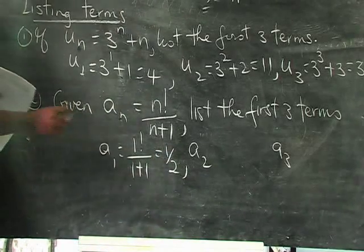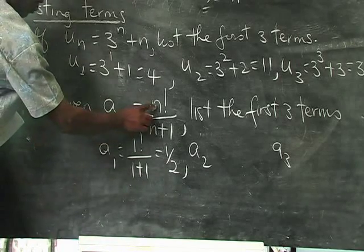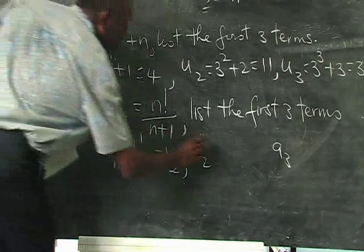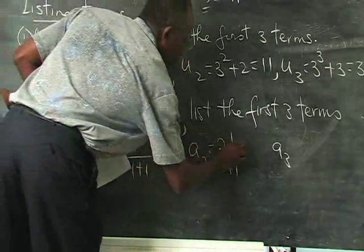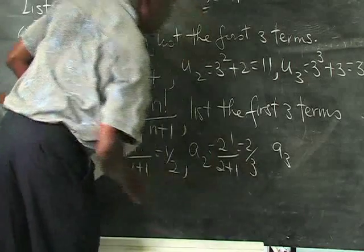Now when you get to A2, it means that N is now 2. So you have 2 factorial over 2 plus 1. 2 factorial is 2. So we get 2 over 3.